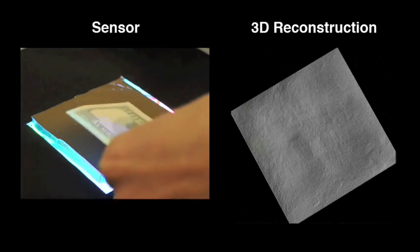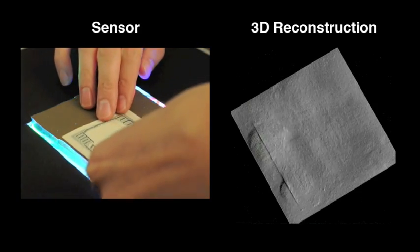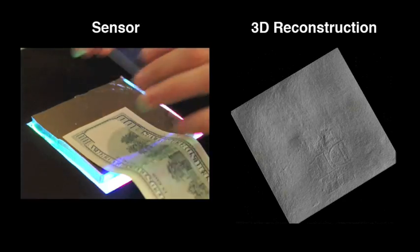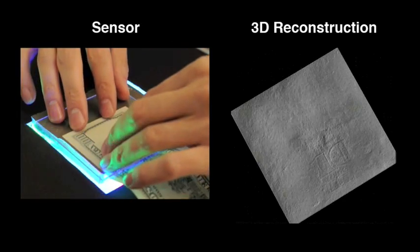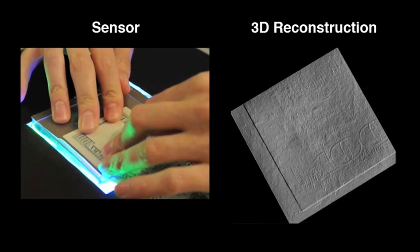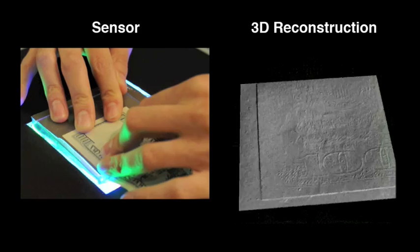GelSight can measure very small surface variations at high resolution. Here the user is pressing a $100 bill into the sensor. Note that many of the details in the bill are visible in the reconstruction.